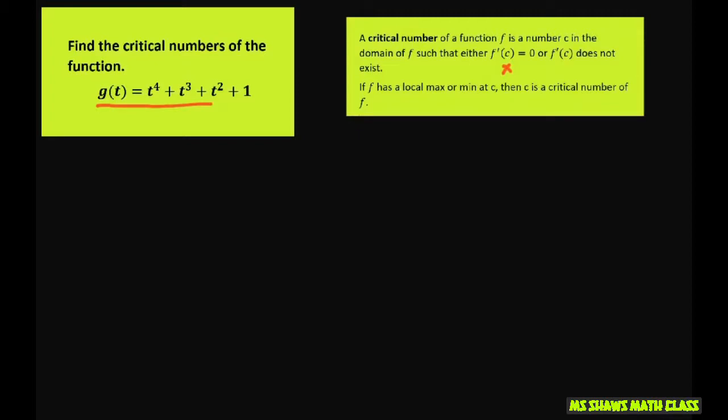Let's first take the derivative of g of t, and that's going to give you 4t cubed plus 3t squared plus 2t.